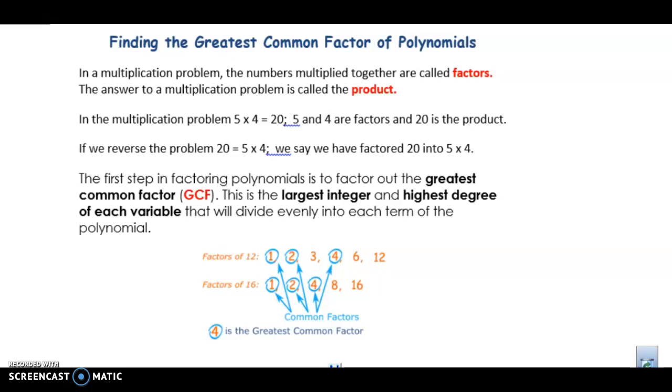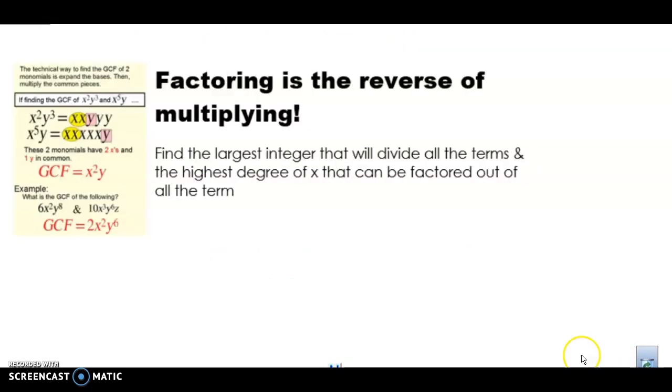Okay, so let's go to the next screen. Factoring is the reverse of multiplying, which is something we've already been doing for a while. One way that you can do it when you have more than one variable is you can write them out, just like they've done here. So, x squared times y to the third power, there are two x's and three y's. And x to the fifth power times y is five x's and one y.